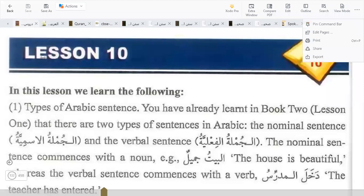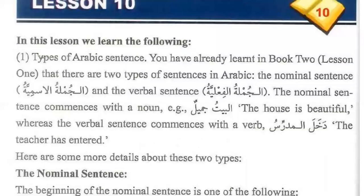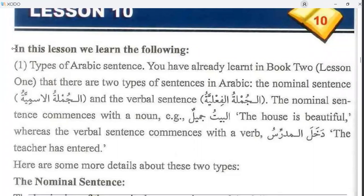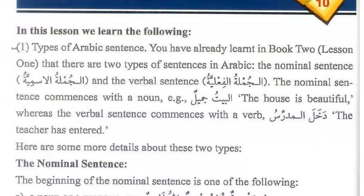Lesson 10, we are going to start today inshallah. In this lesson we learn the following: types of Arabic sentence. You have already learned in book two, lesson one, that there are two types of sentence in Arabic: the nominal sentence and the verbal sentence. The verbal sentence commences with a verb. What are the two types of sentences? Jumlatul ismiyya and jumlatul fi'liyya.